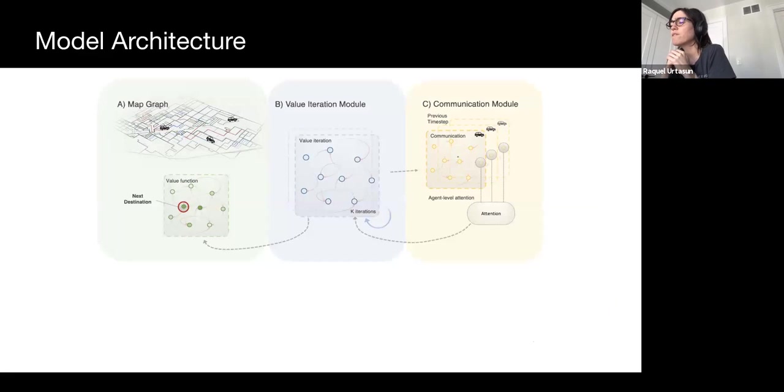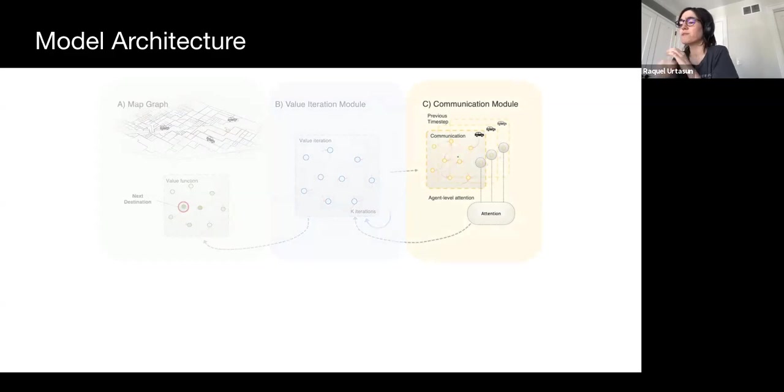As a result, we approach this problem with the following proposed architecture. We extract node information from the map graph, encode that information, and then send these node encodings to our novel conceptualization of a value iteration model. This model iteratively exchanges information between each of the nodes and allows for complex planning to occur in a distributed manner. Finally, the communication model exchanges node information between each of the agents and allows relevant discoveries made by each agent to be shared. This final output is also returned to the map graph in the form of a per-node value function.